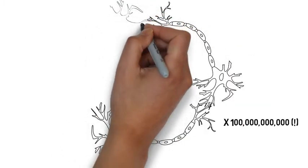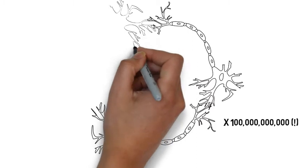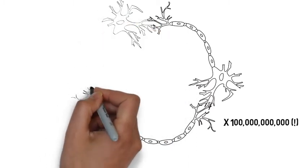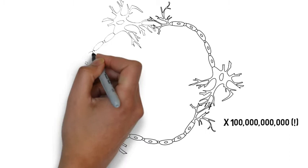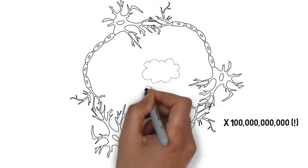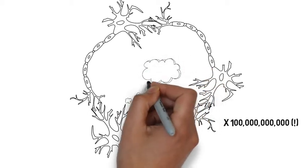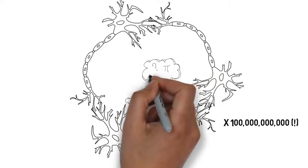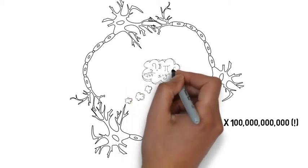As you might imagine, disentangling all of these connections is extremely challenging. With current technology, it's impossible to simultaneously listen to every neuron in a mammalian brain all at once. Instead, what we do is look at smaller neural networks and analyze how their activities and computations relate to higher level brain processes.